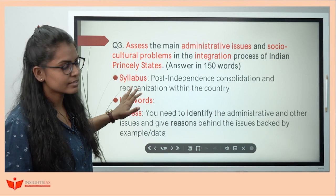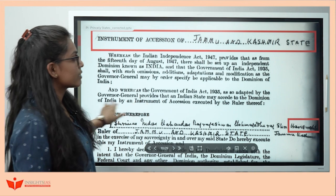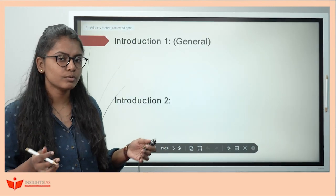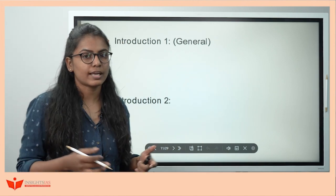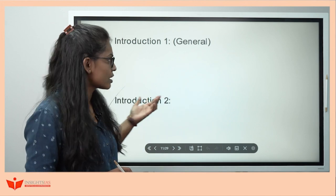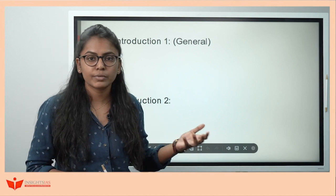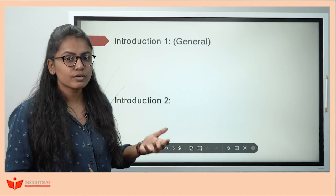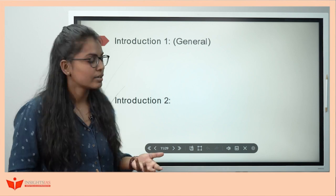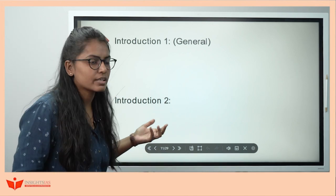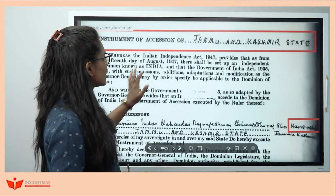Now we understand what has been asked — what integration is and what princely states are. Let's see how we can write the introduction. For a general introduction, you can write: 'Princely states were those which were ruled by natives and indirectly came under the British Crown. Because of vast diversity and differences in culture and personal aspirations of the rulers, integrating these princely states was a bit tricky.'